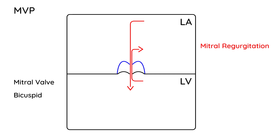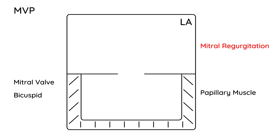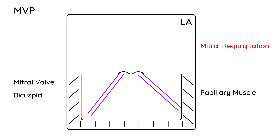I wanted to explain why this happens. In the left ventricle there's a muscle known as the papillary muscles. The mitral valve has two flaps that open and close to allow blood flowing from the left atrium to the left ventricle. There are little tendons — I'll draw them in purple — that connect the papillary muscle to the valve.